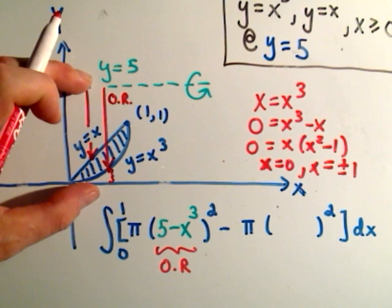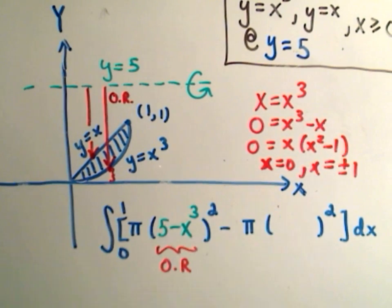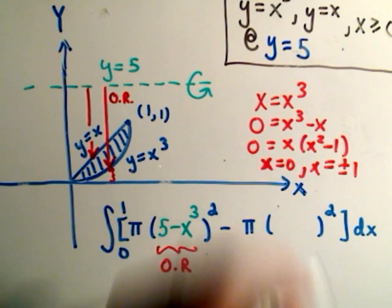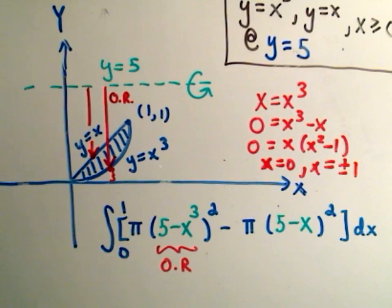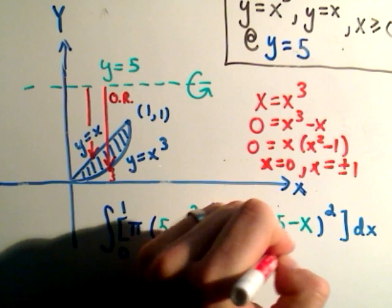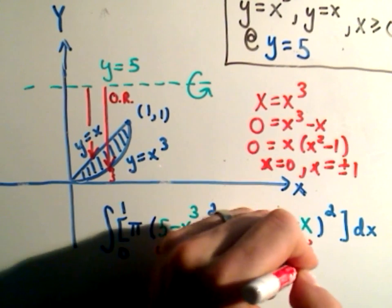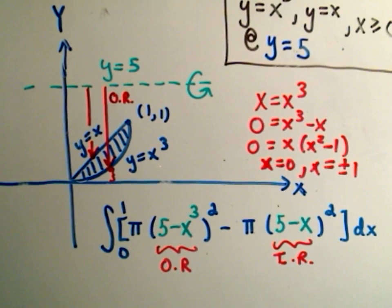So again, the entire length would be 5. It would have a length of 5. But now we have to subtract off that height of x. And that will be our inner radius. Sorry for all the colors here. That will be our inner radius. And we've now got our problem set up.